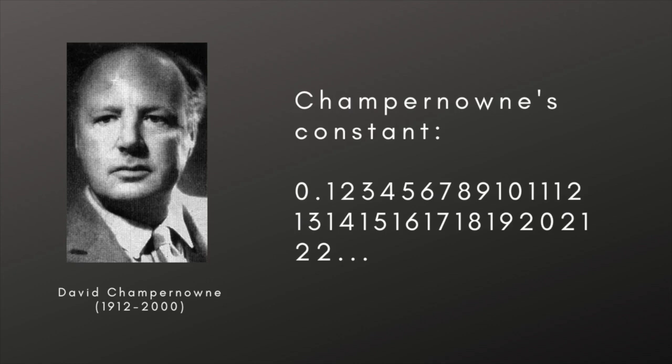1 tenth of the digits are 1, 1 hundredth of pairs of consecutive digits are 1, 2, and so on. Normal in base 10 it may be, but Champernowne's constant is obviously pretty bad at producing sequences that look random, especially at the start. Nor do we know if it's normal in any other base.